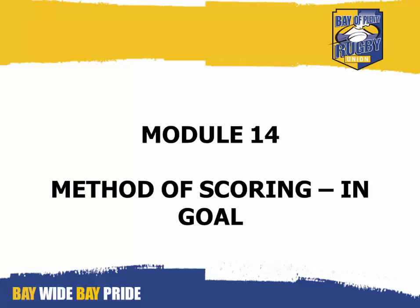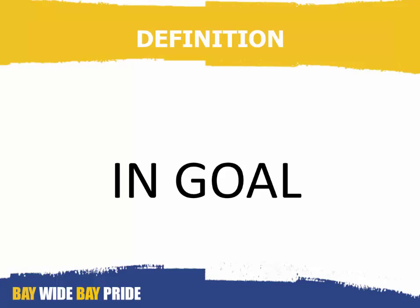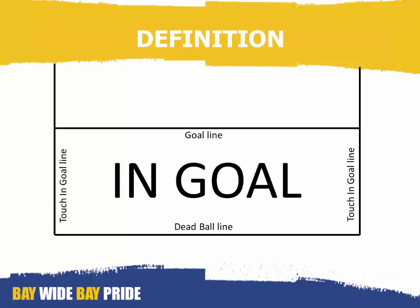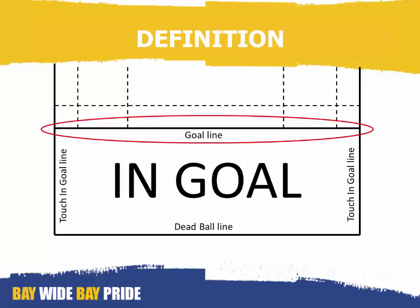Module 14: method of scoring in goal. The definition of in goal is the area between the goal line and the dead ball line, and between the two touch-in-goal lines. It includes the goal line but does not include the touch-in-goal lines or the dead ball line.